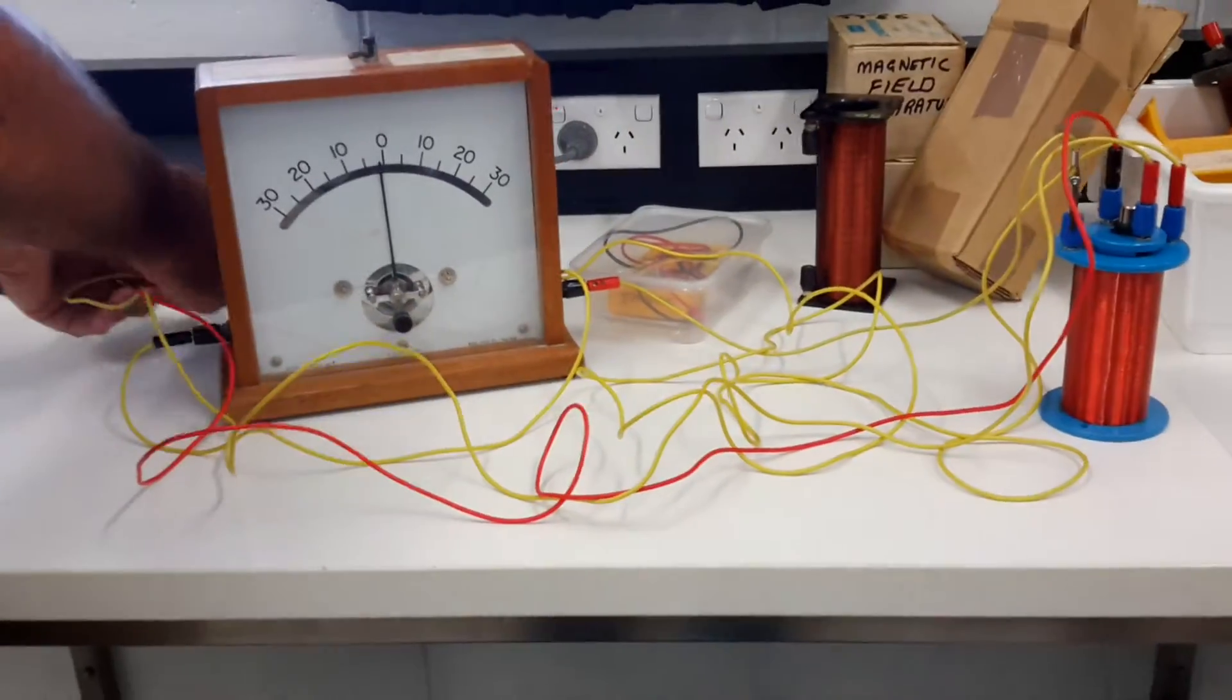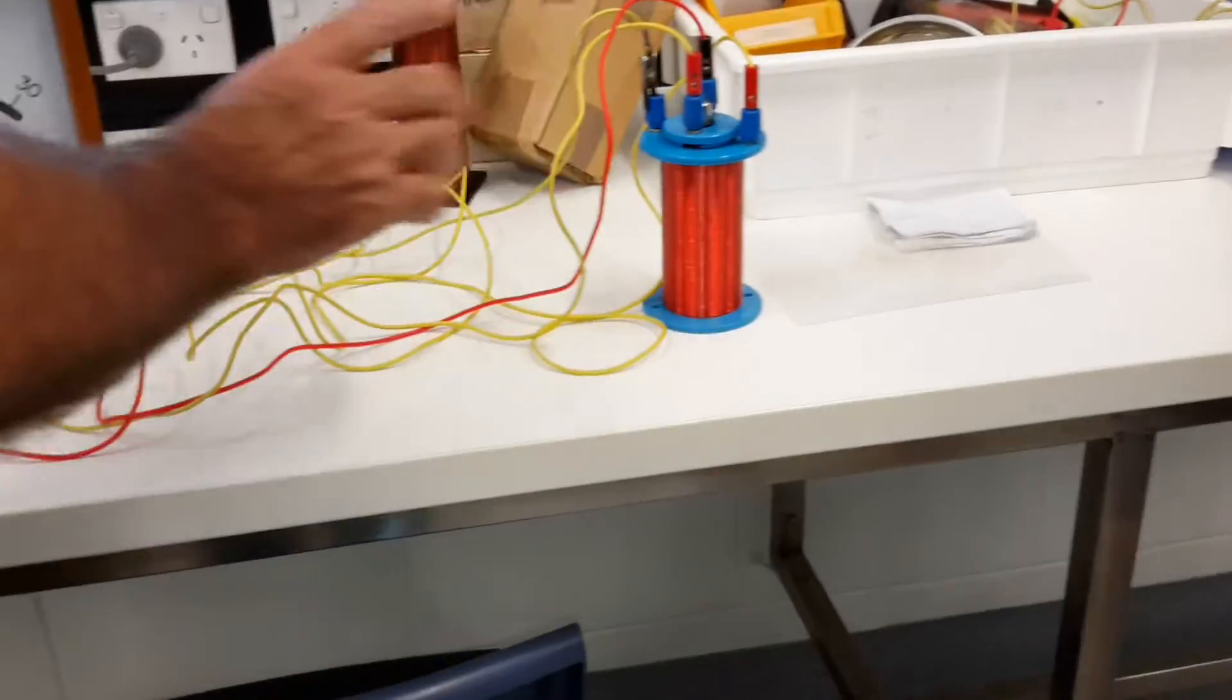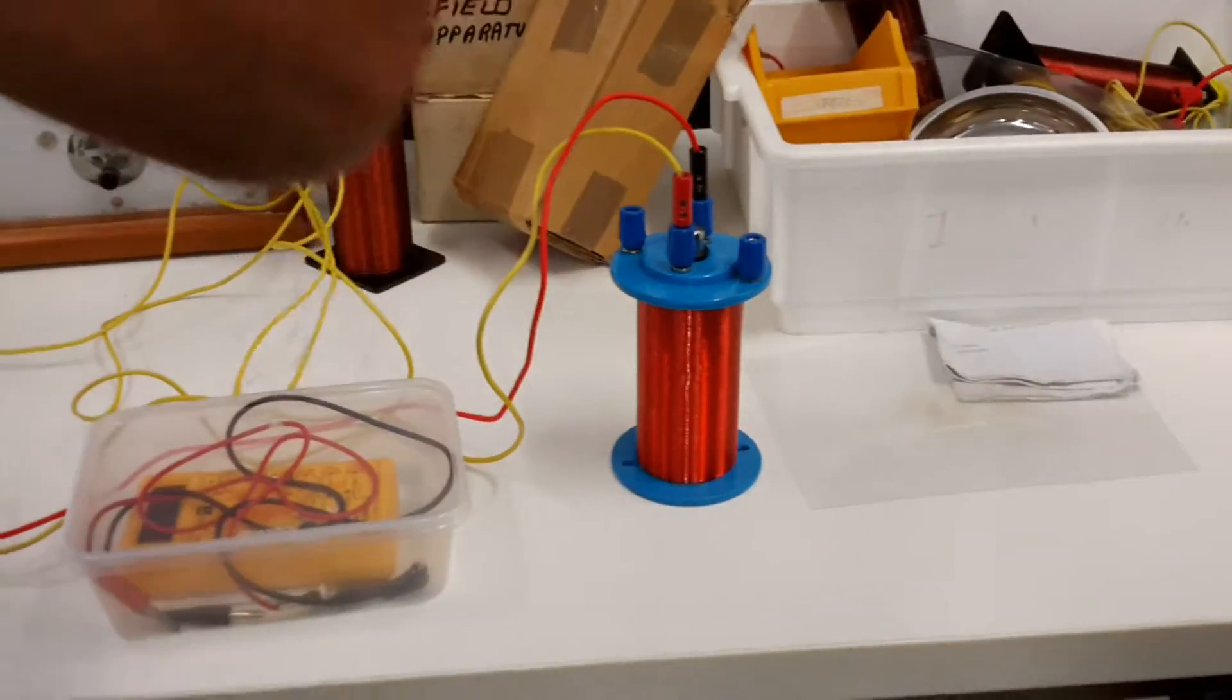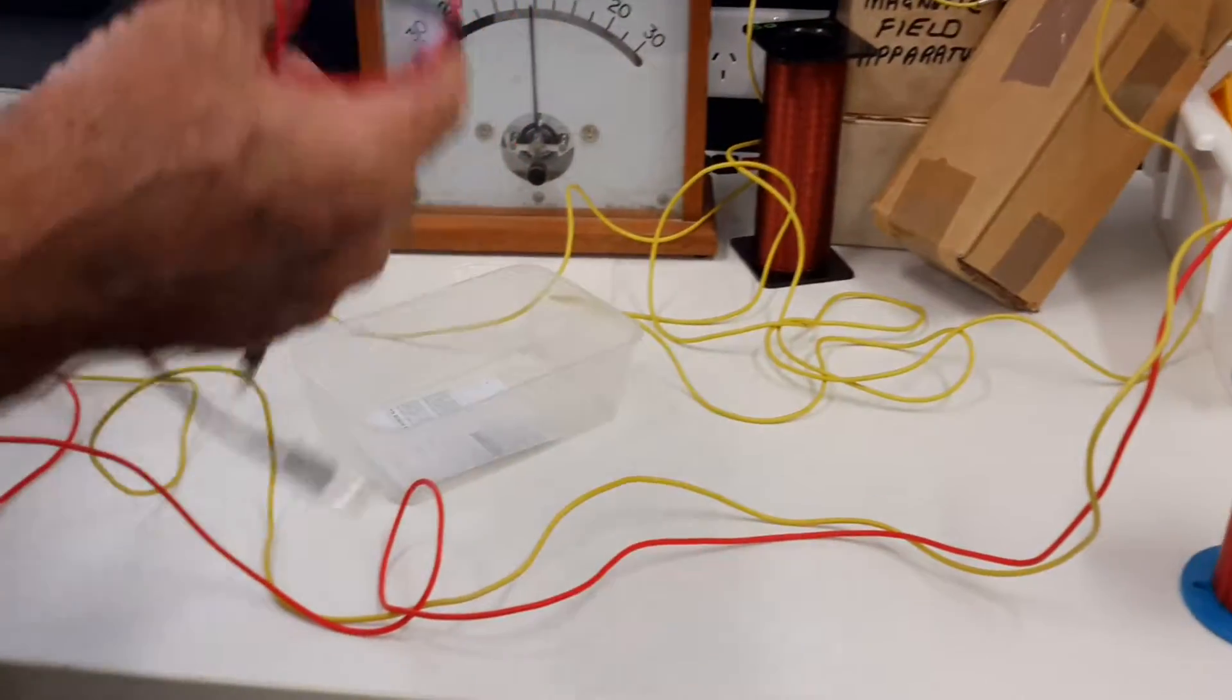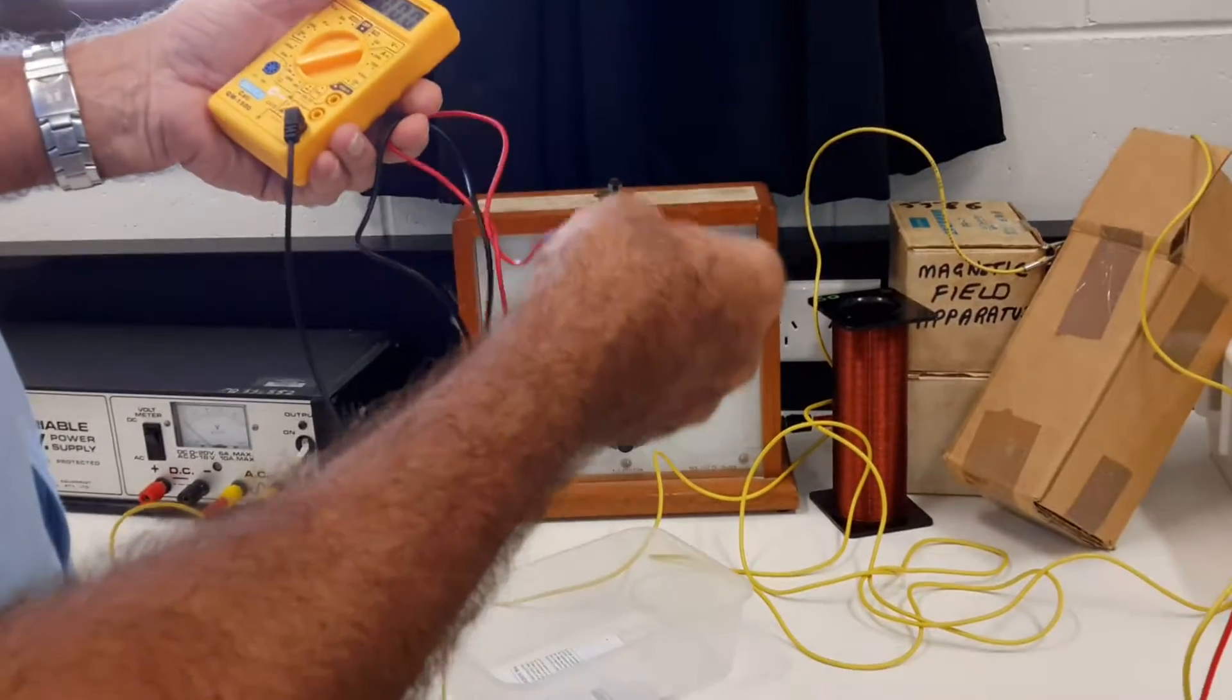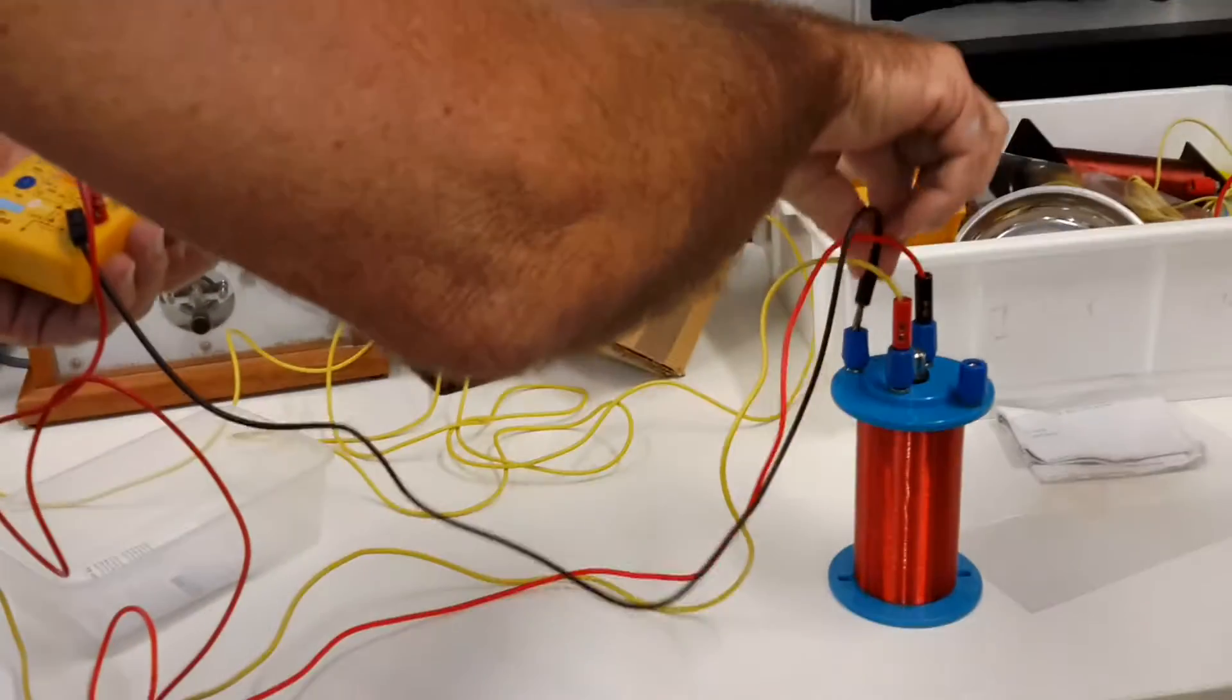Now the only difference is that the transformer works on AC. So what we'll do now is, we can't use that meter - that meter only connects to DC. What we'll now do is use our multimeter on AC to record any voltage. Let's set it on AC and see what happens.